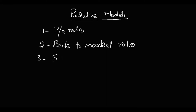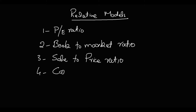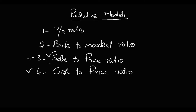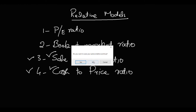Ab third aur fourth method joh hai woh aaj karne hain. Aaj hamara maqsad hai: third is the sales-to-price ratio, and the fourth one is the cash-to-price ratio. Yeh donon ratios ki base ke upar hum aaj decision making karenge. Sales joh hai aapki profit and loss statement ki item hai, aur cash joh hai aapki balance sheet ki item hai. In donon ki base pe hum decide karenge whether to buy a stock or sell a stock.